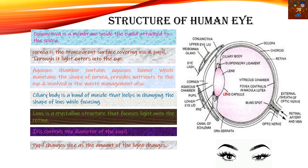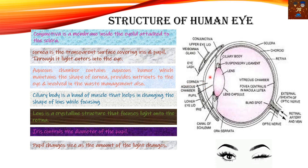The conjunctiva is a membrane inside the eyelid attached to the sclera. Next is the cornea — the transparent surface covering the iris and pupil through which light enters the eye. It is the gateway of light into the eye; if there is a defect in the cornea, light will not enter. The aqueous chamber contains aqueous humor fluid, which maintains the shape of the cornea, provides nutrients to the eye, and is involved in waste management.